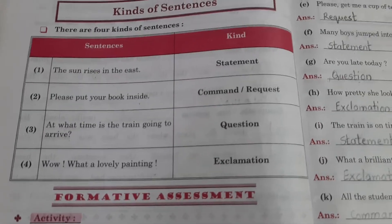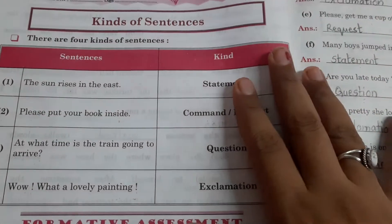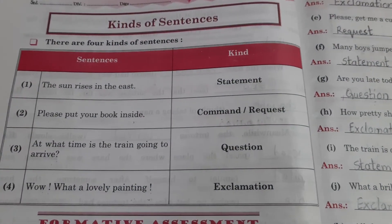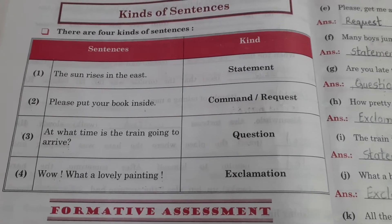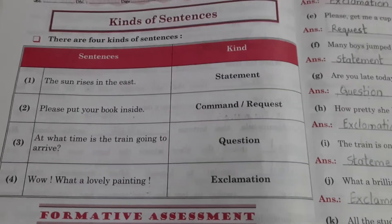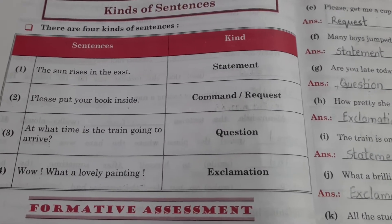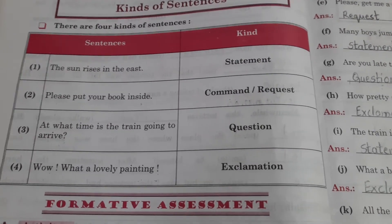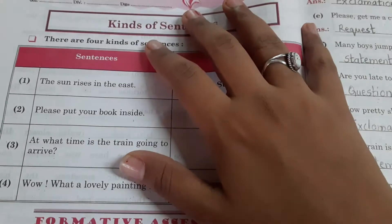Hello children, I have come up with a new concept: kinds of sentences. Now, we had studied sentences. What do you mean by sentence? A group of words which has complete meaning. If words are there but that meaning is incomplete, it's not a sentence. So, if it has complete meaning, it's a sentence.